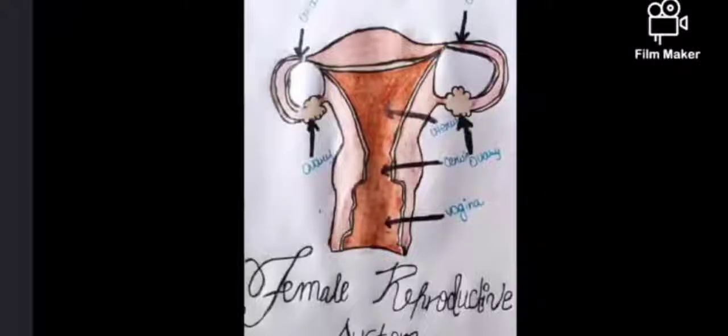If the primary reproductive system is damaged, the whole function of reproduction will be impaired. However, if the accessory parts are damaged, fewer problems occur. The female reproductive system consists of a pair of ovaries, a pair of oviducts, uterus, vagina, and vulva.